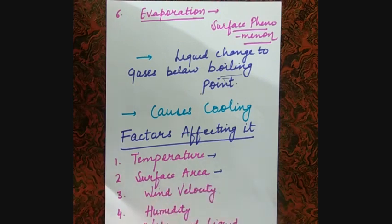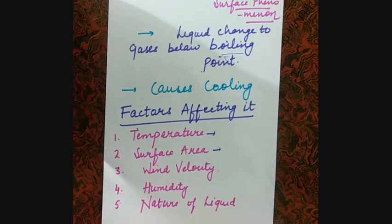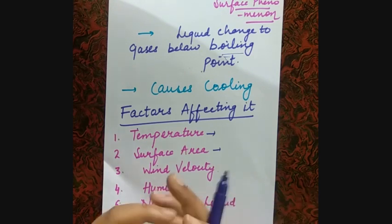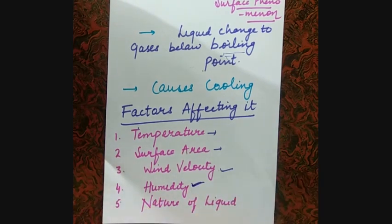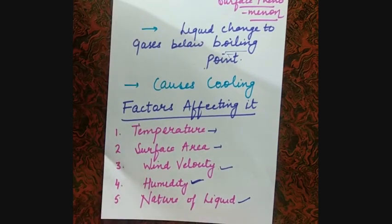When surface area increases, evaporation occurs more easily. Third factor is wind velocity — when you put wet clothes to dry, if the wind is blowing, the clothes dry faster because the water droplets are taken up by the environment. Fourth factor is humidity — the higher the humidity, the lower the evaporation.